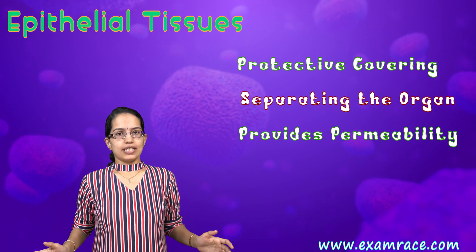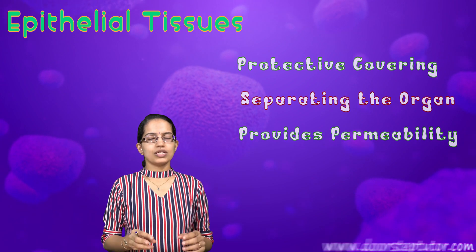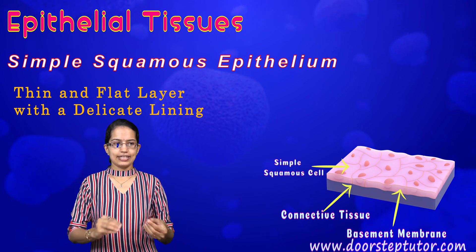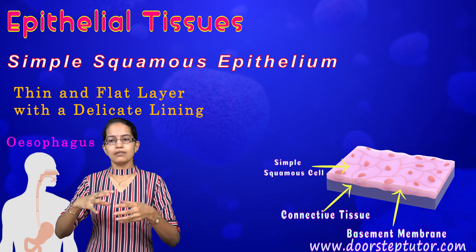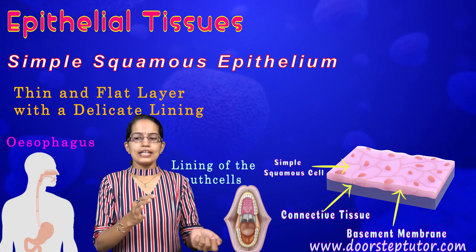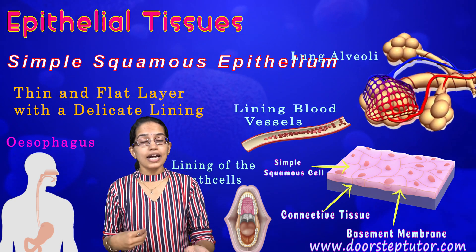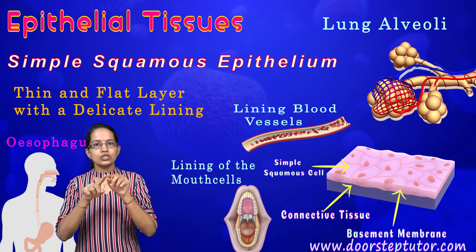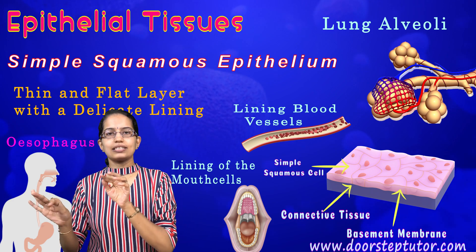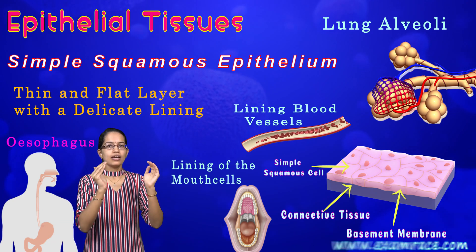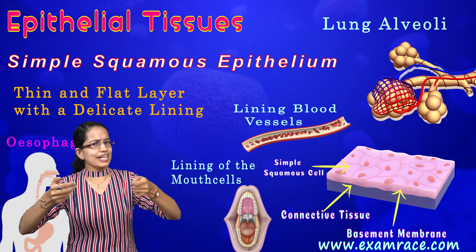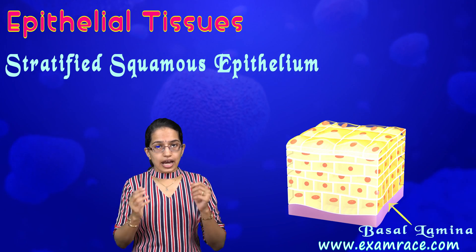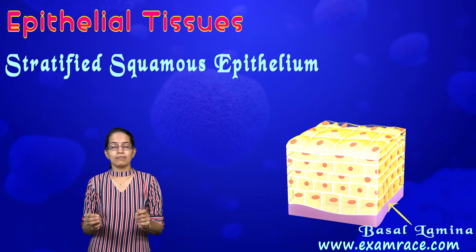Epithelial tissues can be of various types. The first and most simple is simple squamous epithelium, which has thin and flat layers with delicate linings. The esophagus, mouth cells, linings of blood vessels, and lung alveoli are good examples — small flat structures arranged in a closely knit layer with a very delicate lining.